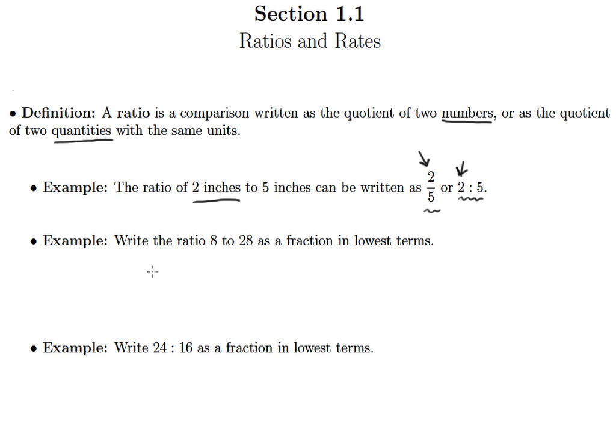So when I look at this next example of 8 to 28, it asks me to write it as a fraction in lowest terms. So I know that 8 needs to be on top and 28 needs to be on bottom, because 8 comes first when the ratio is written in words. So I'm comparing 8 to 28. We should remember from our knowledge of fractions that a fraction is really a way to compare one number to another.